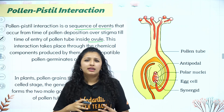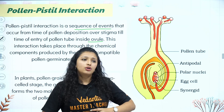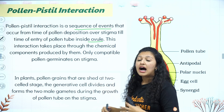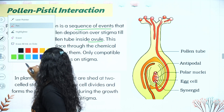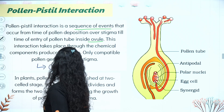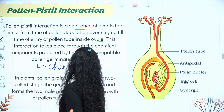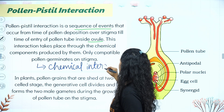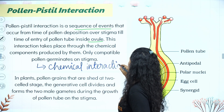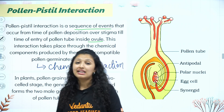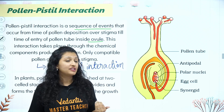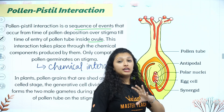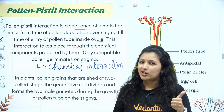The stigma and pollen grain will communicate through a chemical interaction to decide compatibility. Based on this chemical interaction, we are going to learn about self-incompatibility. In the plant, if we need cross-pollination, the stigma will selectively allow only compatible pollen to germinate.